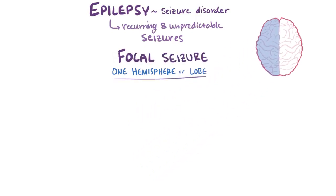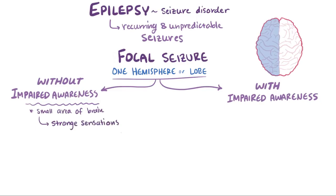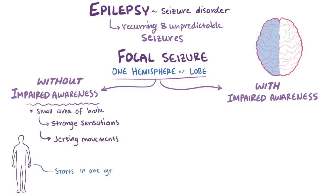Focal seizures are subcategorized as either without impaired awareness or with impaired awareness. Focal seizures without impaired awareness typically affect a small area of the brain, and can involve strange sensations like hearing or tasting something, or jerking movements in specific muscle groups. If the jerking activity starts in a specific muscle group and then spreads to surrounding muscle groups as more neurons are affected, it's referred to as a Jacksonian march.